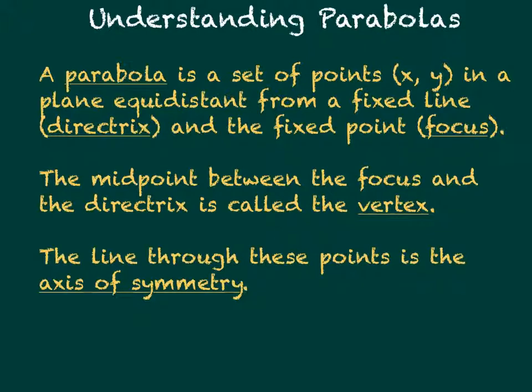The midpoint between the focus and the directrix is called the vertex, and this vertex is our (h,k) point. The line through these points is called the axis of symmetry - if you draw a line through the vertex and the focus, it's the axis of symmetry.